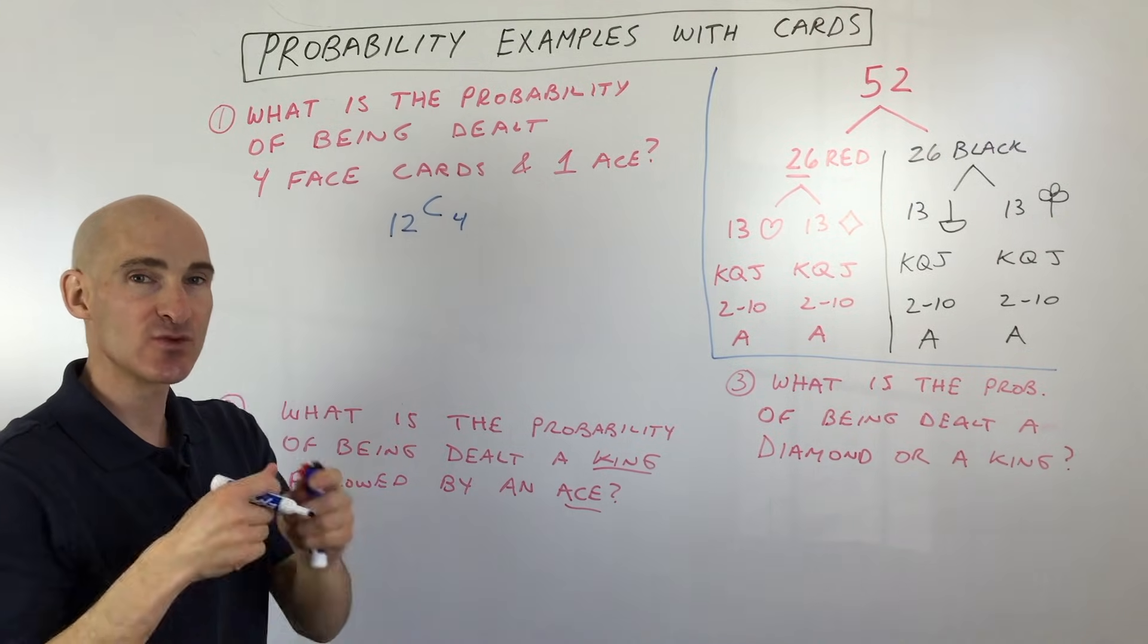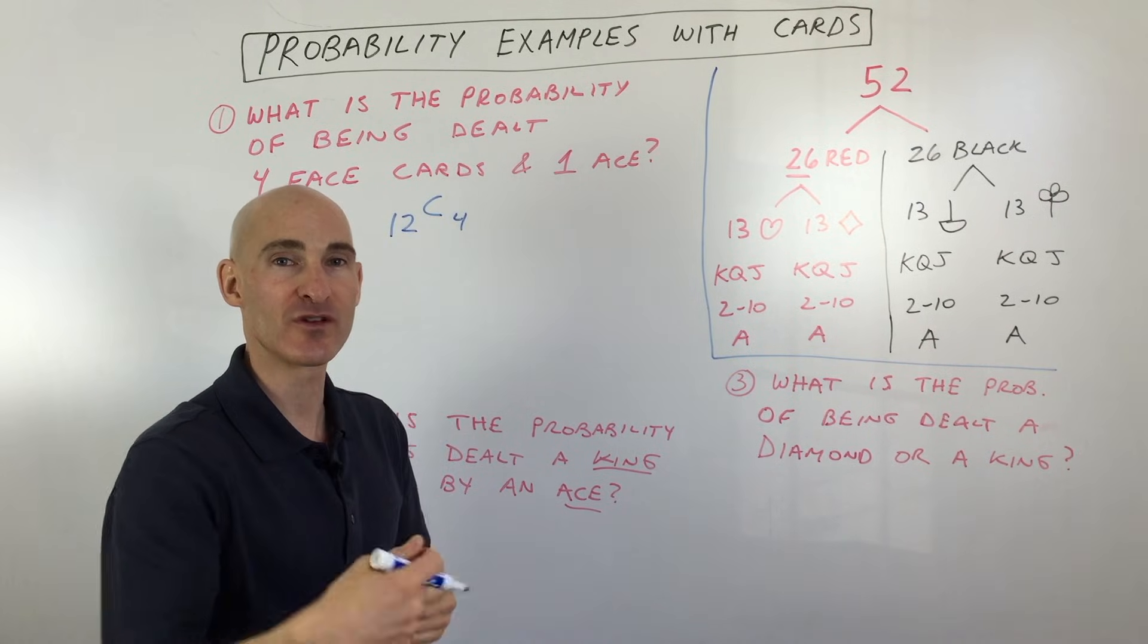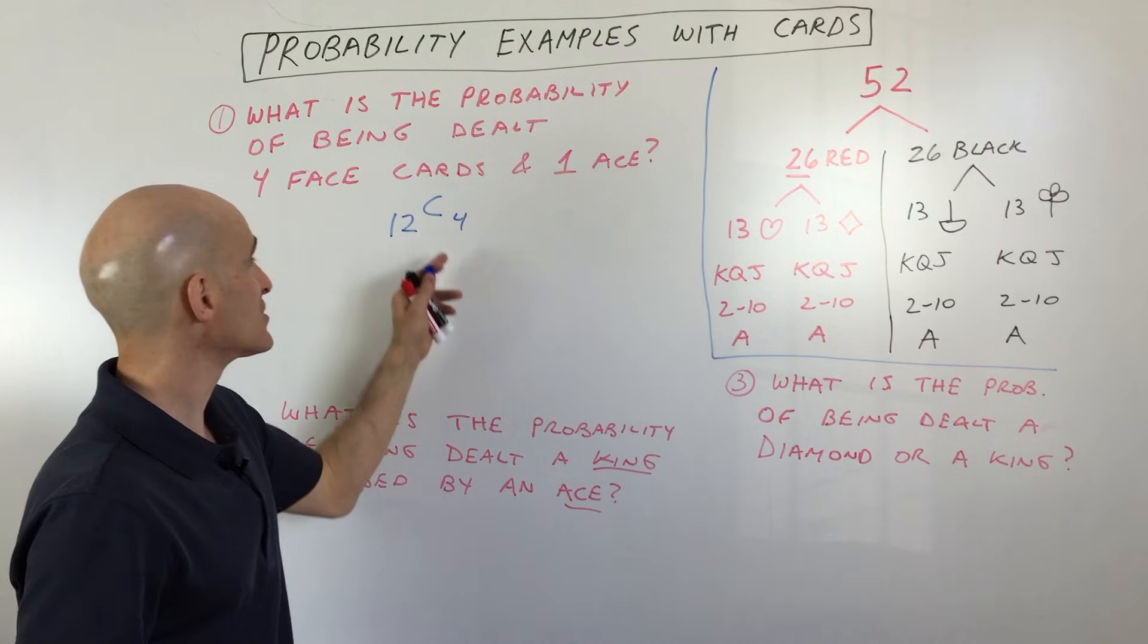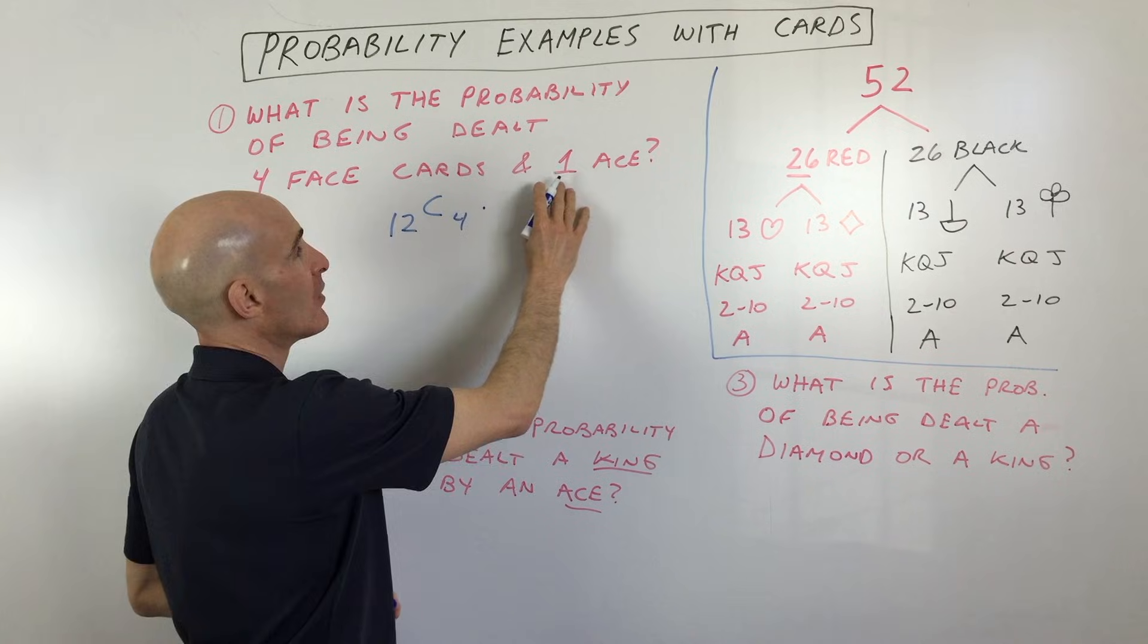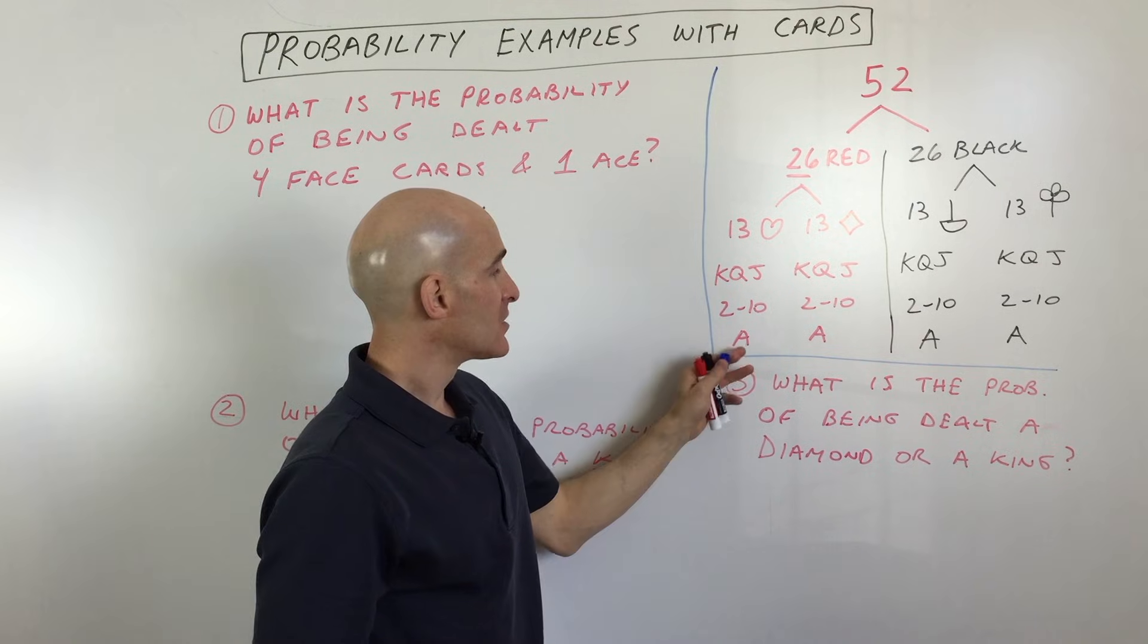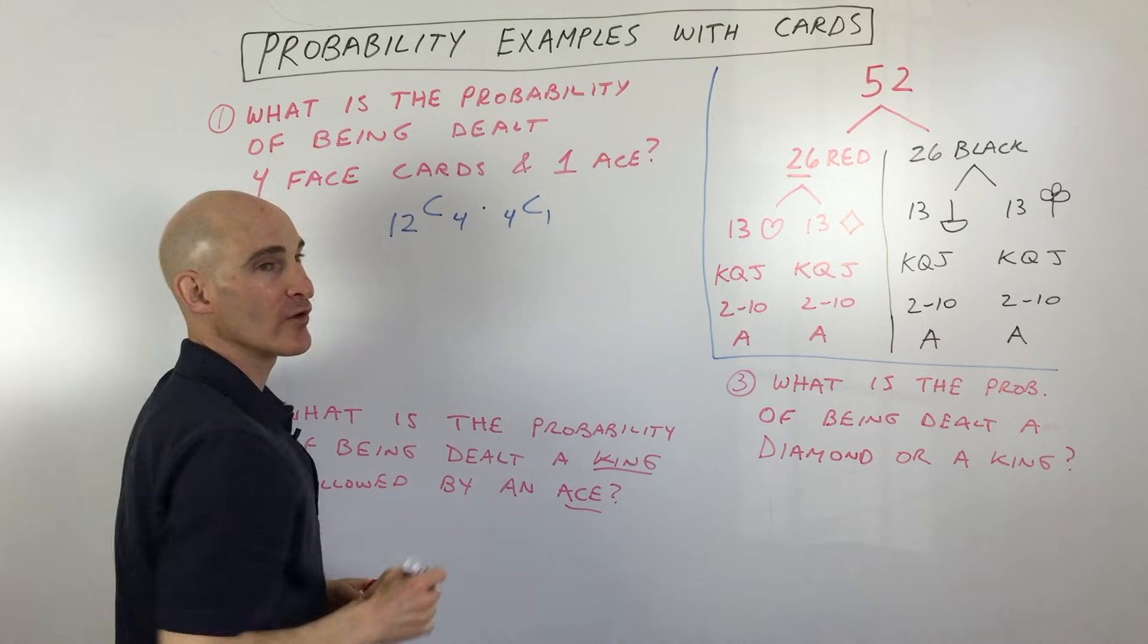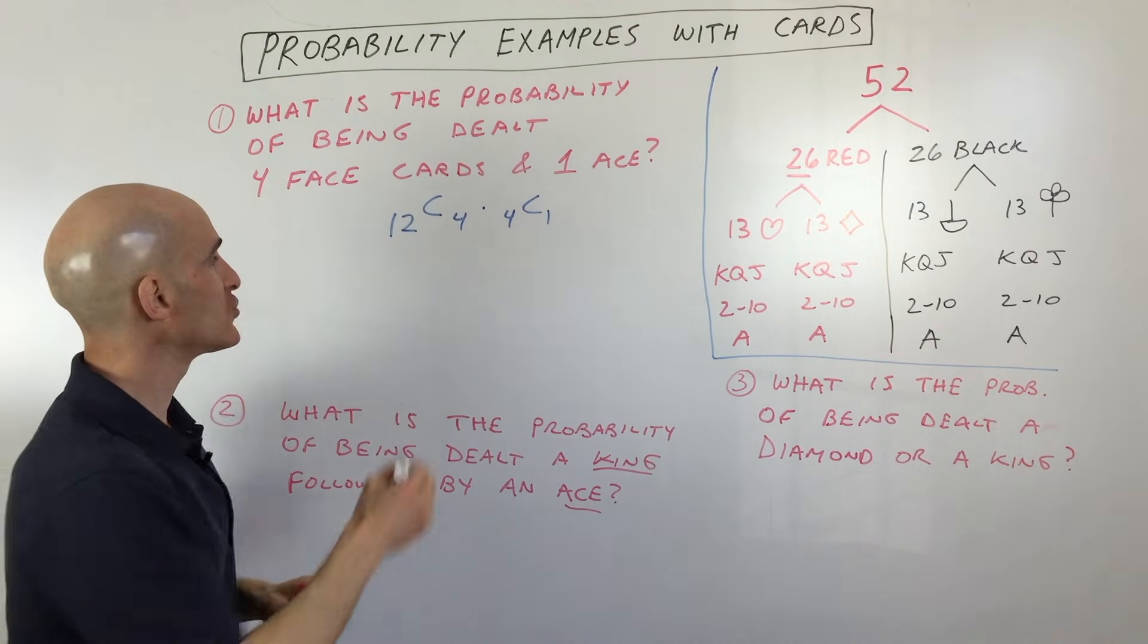Now the reason I'm using combinations is because when you're dealt these cards, when you hold them in your hand, it doesn't matter what order they're dealt to you. So we don't want to use permutations, we want to use combinations because the order is not important. But then we're going to multiply this by all different ways to get one ace. There's an ace of hearts, diamonds, spades, and clubs. So out of the four aces, we want to find out how many ways there are to choose one. There's four ways. But we can use it as a combination, four choose one.